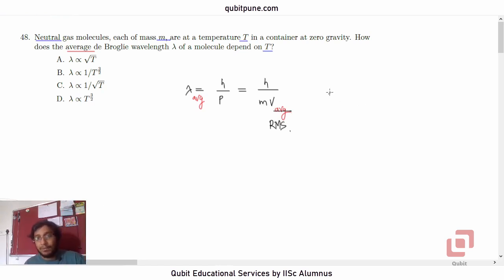Now from kinetic theory, what is V RMS? V RMS is given by root of 3RT upon M0, where M0 is the molar mass of the gas.